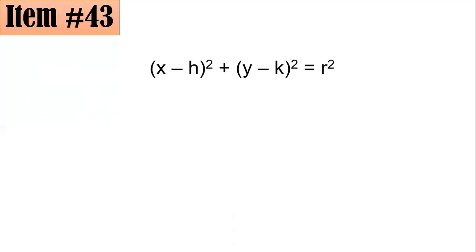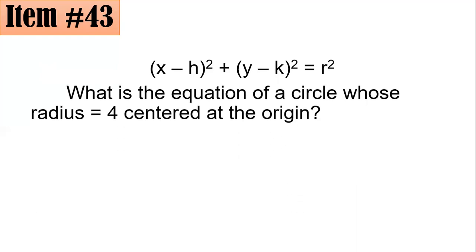For our answers here, we have to remember that the standard form of a circle, or the equation in center radius form is (x - h)² + (y - k)² = r², where h and k are the coordinates of the center and r is your radius. So, since our center is at the origin, so h and k are both 0, and your r is 4 in this case.